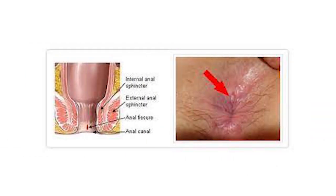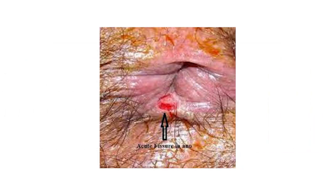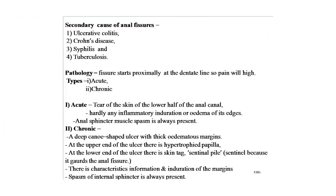Here is another image of fissure in ano — an acute fissure in ano showing redness around the anus and anal orifice. This is another image showing a typical ulcer at the 6 o'clock position posteriorly to the anal orifice. Secondary causes of anal fissures include ulcerative colitis, Crohn's disease, syphilis, and tuberculosis.